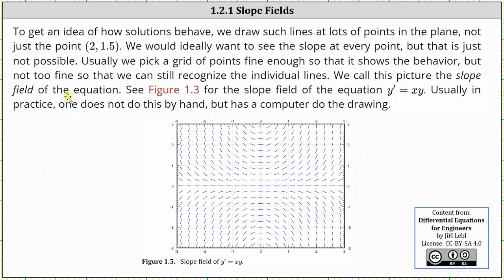To get an idea of how solutions behave, we draw such line segments at lots of points in the plane, not just at the point 2 comma 1.5. We would ideally want to see the slope at every point, but this is just not possible. Usually we pick a grid of points fine enough so that we can show the behavior, but not too fine so that we can still recognize the individual line segments. We call this picture the slope field of the differential equation. Figure 1.3 below is the slope field for the differential equation y prime equals x times y.